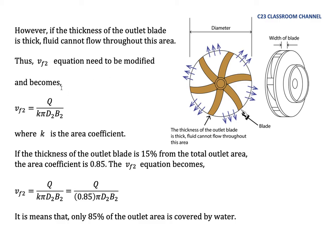The equation of vf2 needs to be modified and becomes vf2 equals Q over kπD2B2, where k is the area coefficient. The k here will show how many percent of the area actually flows the water out. If the thickness of the outlet blade is 15% from the total outlet area, the area coefficient is 0.85. This means that only 85% of the outlet area is covered by water.